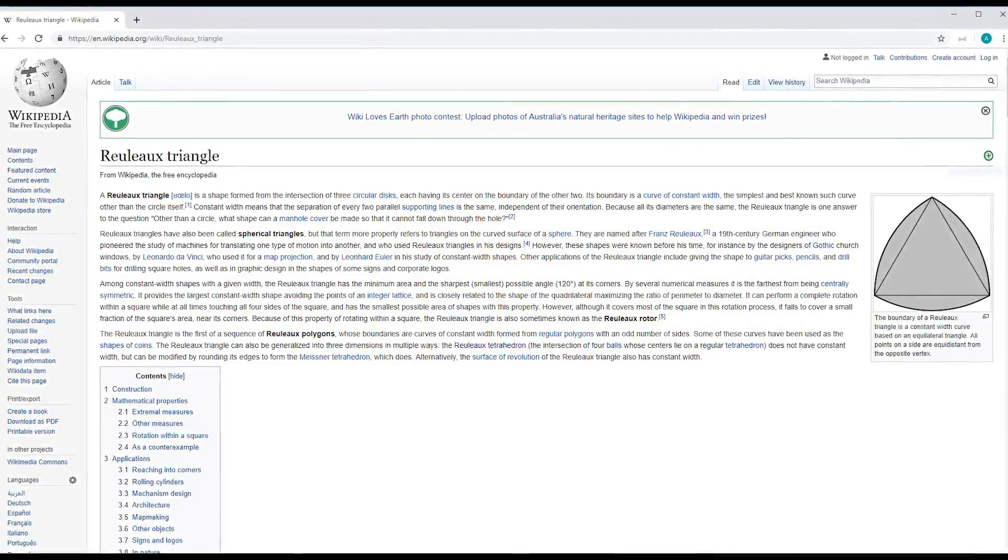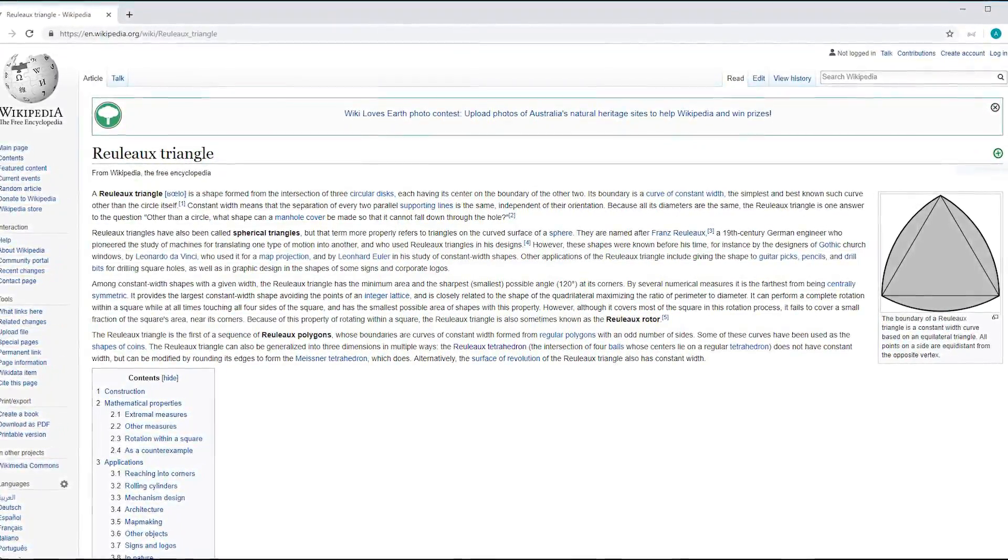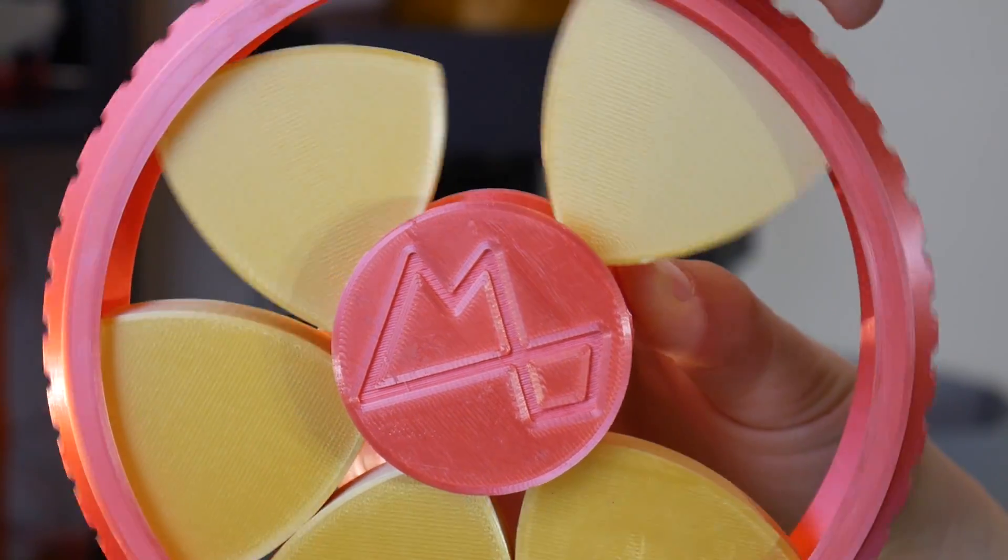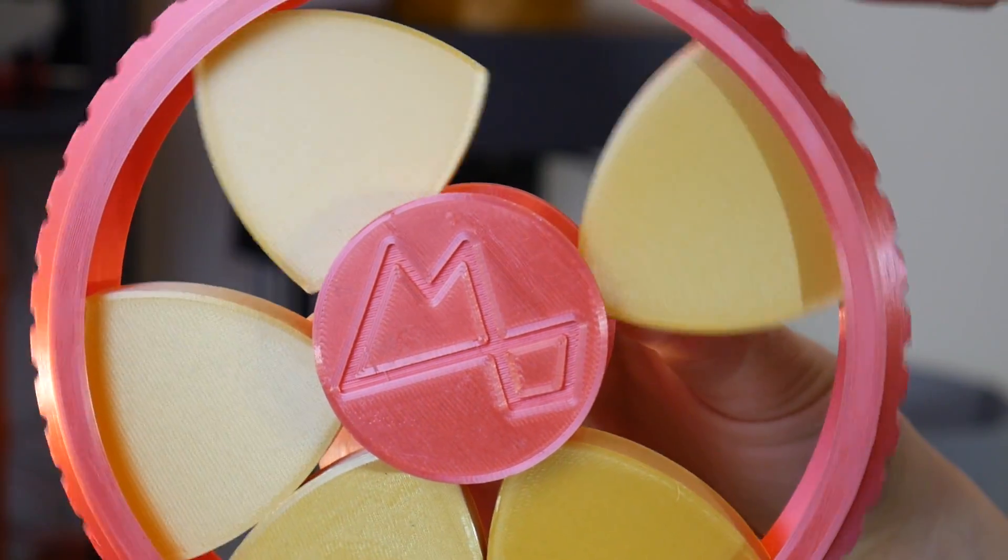The two-dimensional Reuleaux Triangle is a curve of constant width. No matter what orientation, the top and bottom distance of the object remains the same.